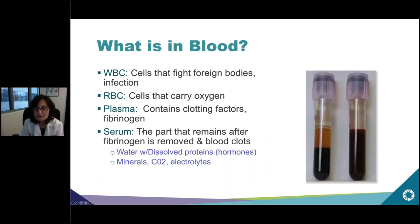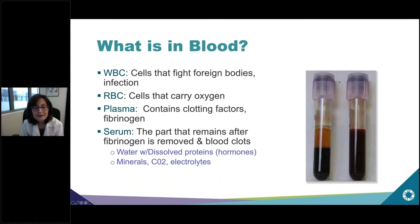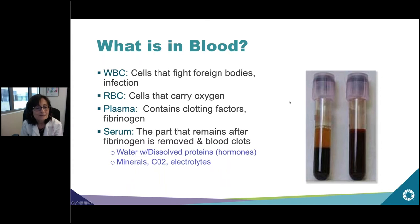Most of your lab tests are going to be from blood. What is in your blood? First, white cells that fight foreign bodies; red cells that carry oxygen; and plasma that contains clotting factors. Shown here is a panel of blood that has been spun. The serum — the clear part on top that remains after fibrinogen is removed — contains dissolved proteins, hormones, minerals, carbon dioxide, and electrolytes, and all of that is measured.